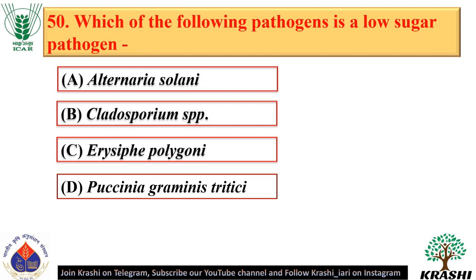Question number 50. Alternaria solani is a low sugar pathogen — option A.